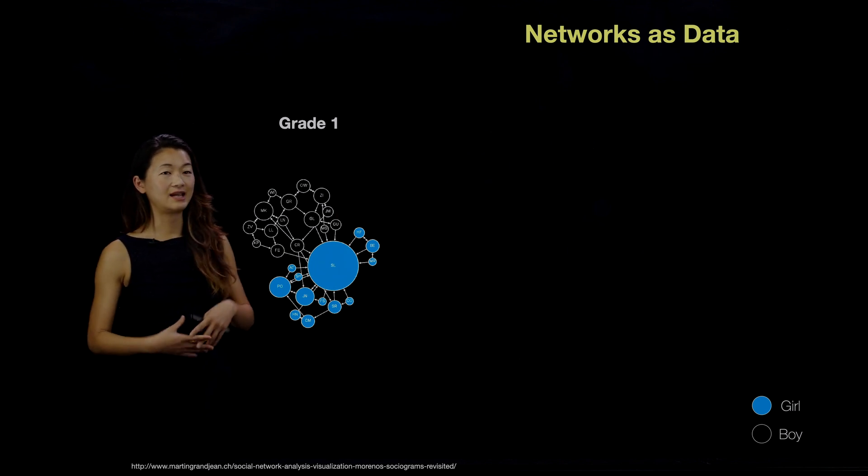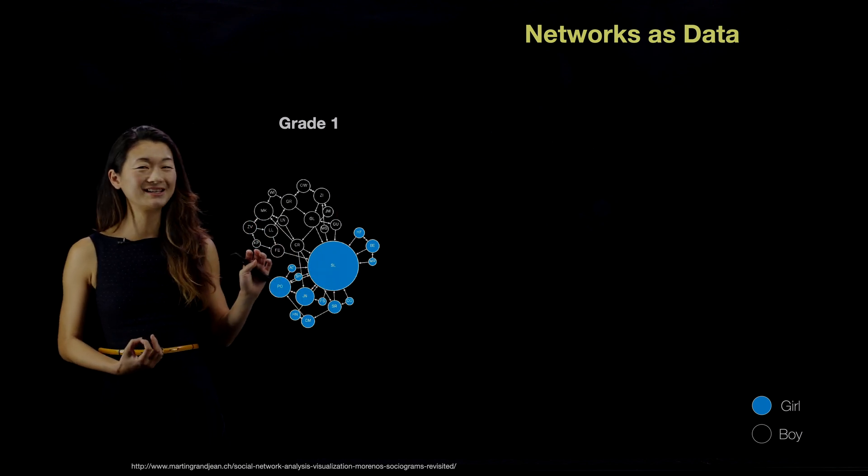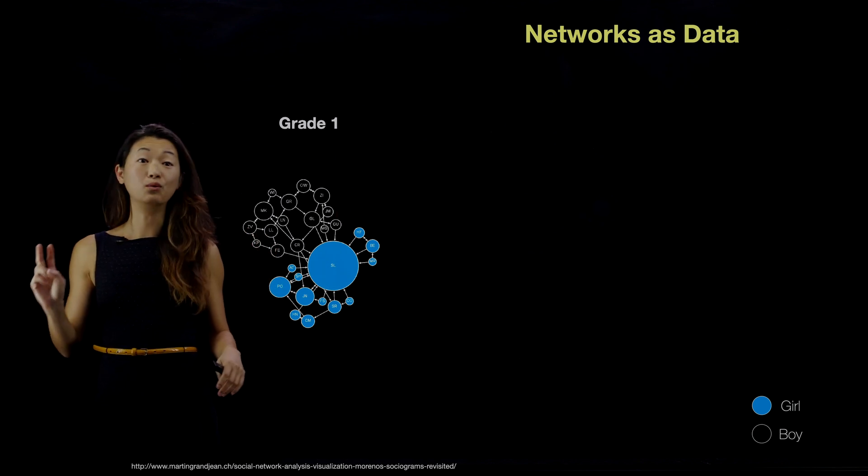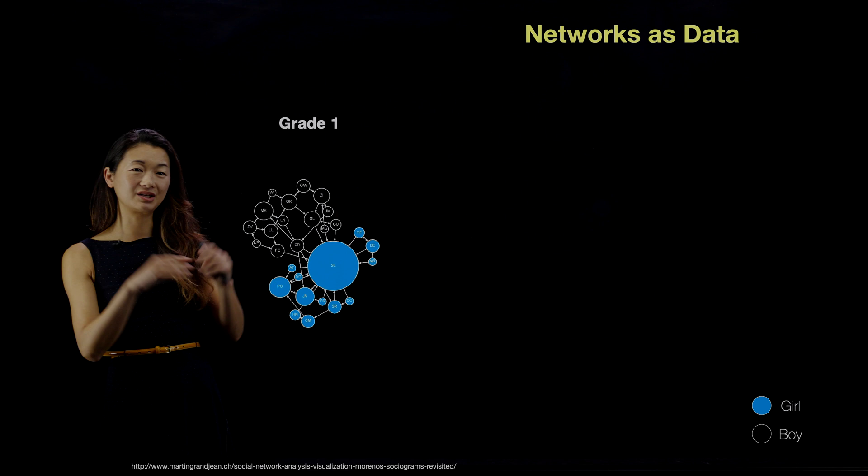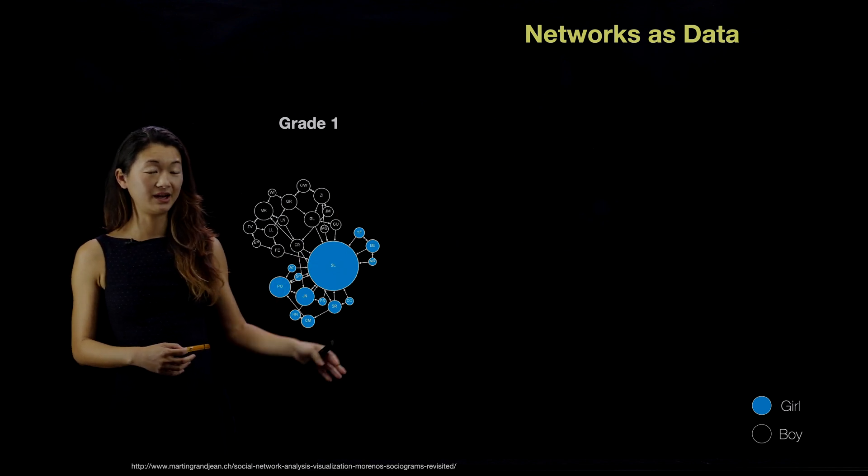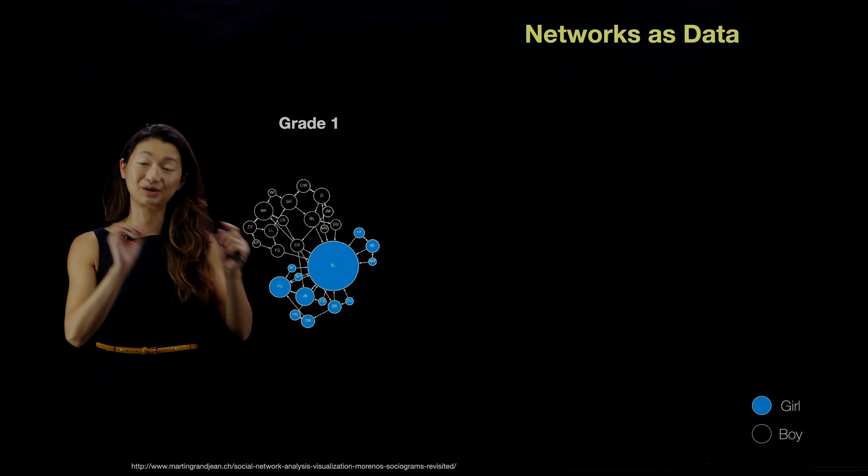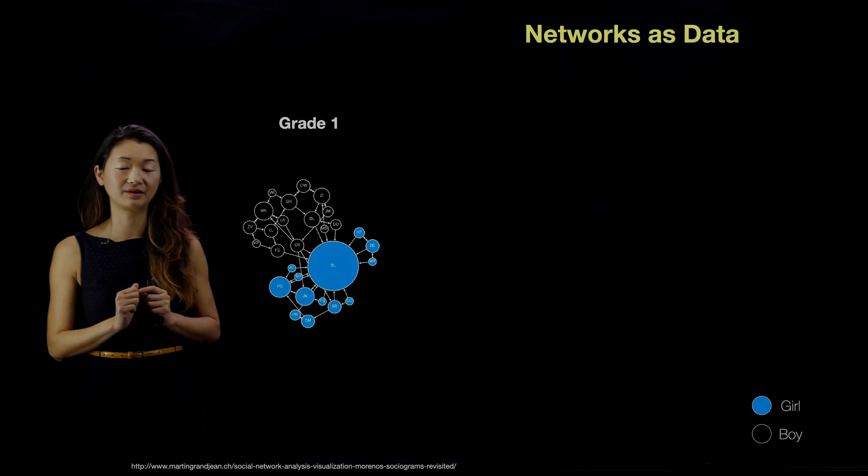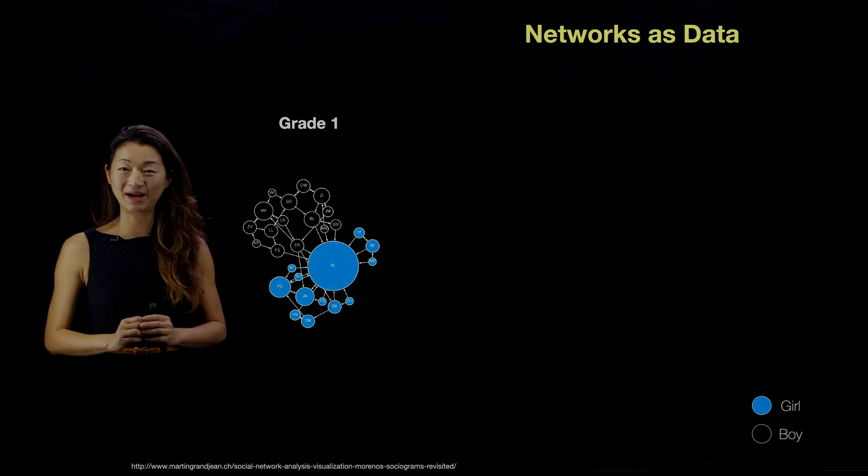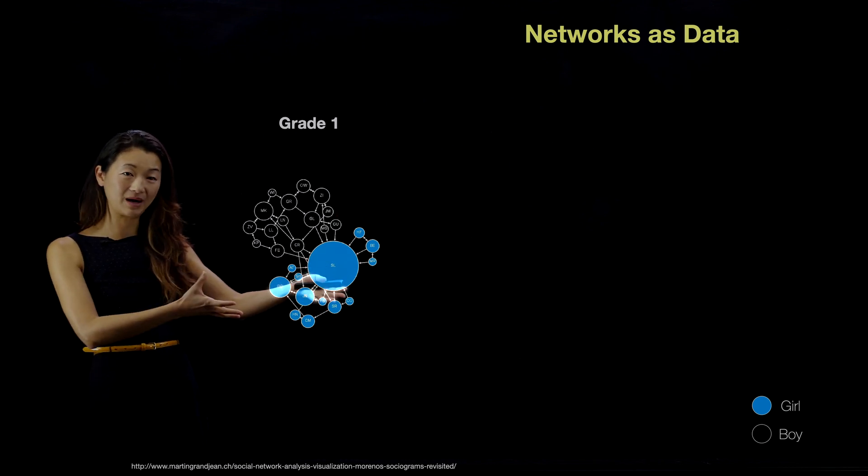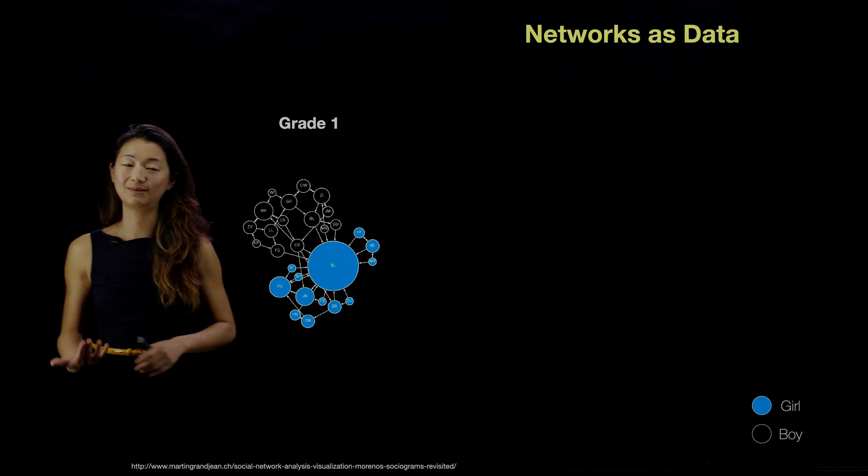What we're looking at here is a network that's visualized as individuals. These are kids in first grade, in one first grade class, and what they've done here is they ask every kid if you could pick two other people to sit next to, who would they be? And so they all took this little survey and the results are visualized here where each circle is an individual. The girls are colored as blue and the black circles are boys. The diameter of the circles corresponds to how many people picked that person, how many people wanted to sit next to them. And so you can see here, SL is super popular. Everyone wants to sit next to SL in first grade. So the social dynamics here are rather obvious, just looking at this network visualization. You have one popular person. Everyone wants to sit next to her. And then boys want to sit next to each other and the girls want to sit next to each other. Very typical social dynamics in first grade.